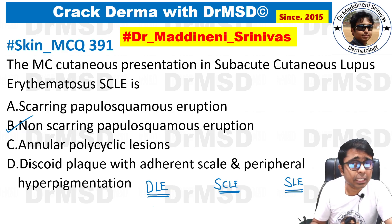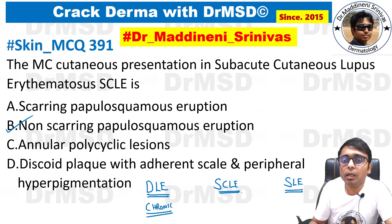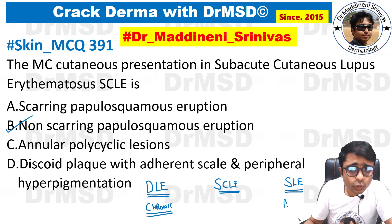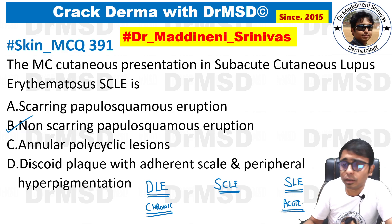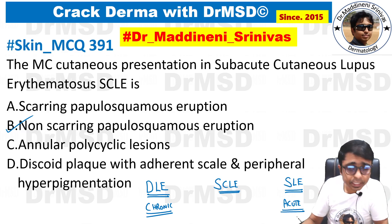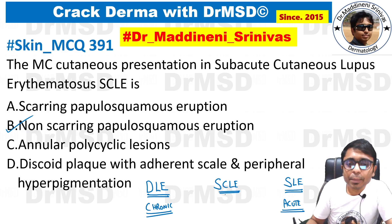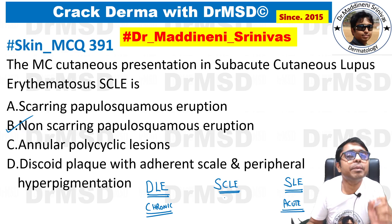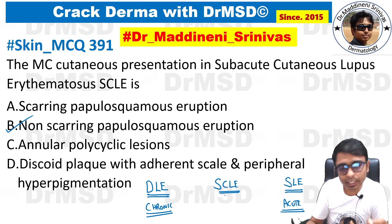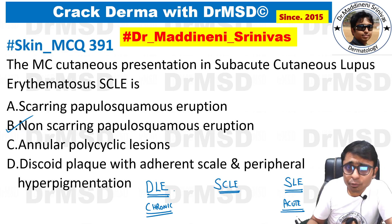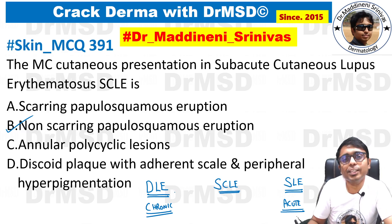Briefly about these three conditions: discoid lupus erythematosus is a chronic form, whereas systemic lupus erythematosus has certain acute features which manifest in the skin. Subacute cutaneous lupus erythematosus, as the name suggests, is in between.